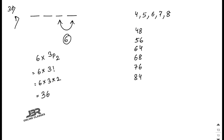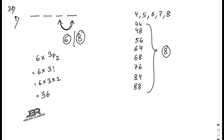Part two: repetition is allowed. Valid last-two-digit pairs divisible by 4 now include: 44, 48, 56, 64, 68, 76, 84, 88 — total 8 pairs. For the first two places, each can be any of the 5 digits (repetition allowed), giving 5 × 5 = 25. Total = 8 × 25 = 200.